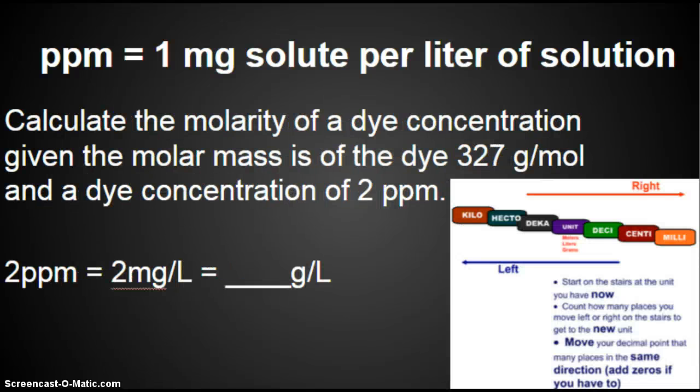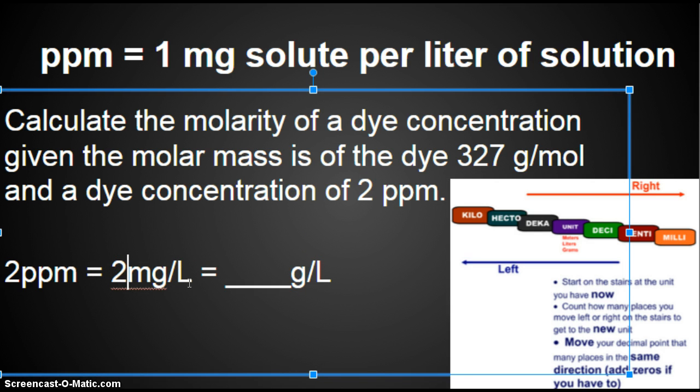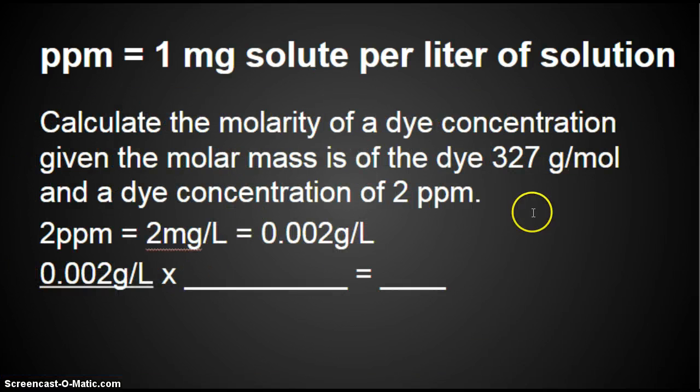We need to change our 2 milligrams per liter into grams per liter. As a reminder, you can use the metric staircase and pretend you're a little person on the staircase. We start with milligram and we're going to grams. So 1, 2, 3 hops to the left. We take our decimal which was right here and move it 1, 2, 3 hops to the left. We end up getting 0.002 grams per liter.